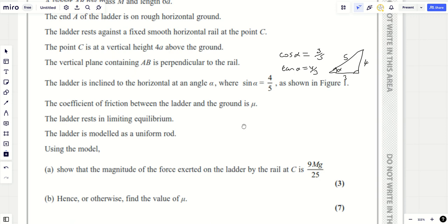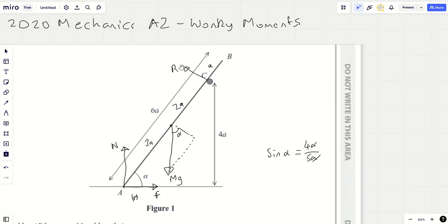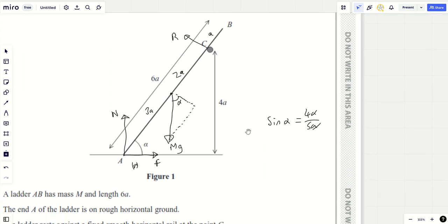The first question is to find the magnitude of force exerted on the ladder by the rail at C, or show that it's 9mg over 25. This is the force r, so we need to find r. To do that, the natural way would be to take moments at A. Moments at A: we're going to have 3a, that's the distance, by the perpendicular component of force mg cos alpha.